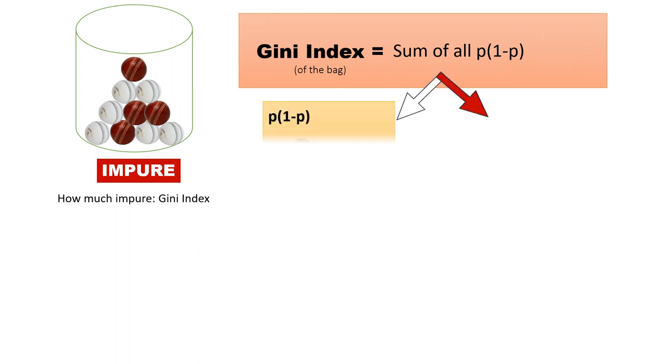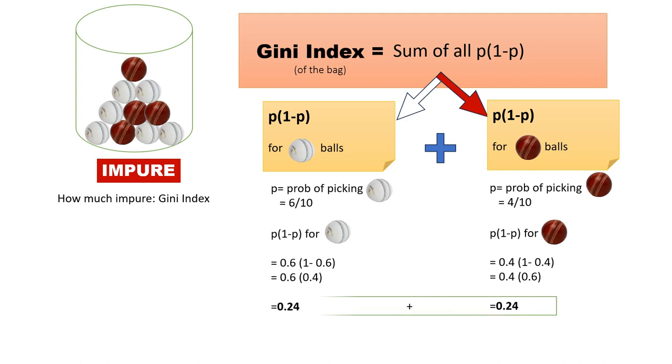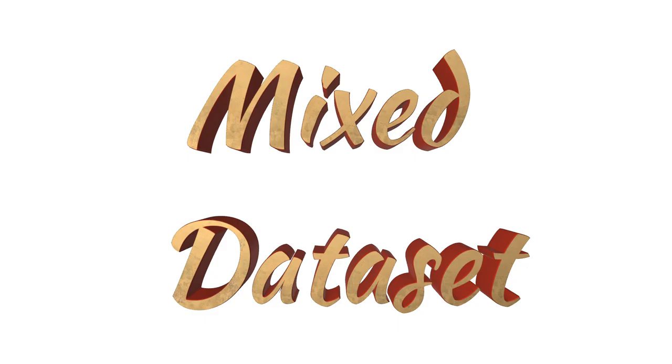p(1-p) for white ball is 0.6 into 0.4, and for red ball is 0.4 into 0.6. Adding these two values gives us the Gini index for this entire bag.